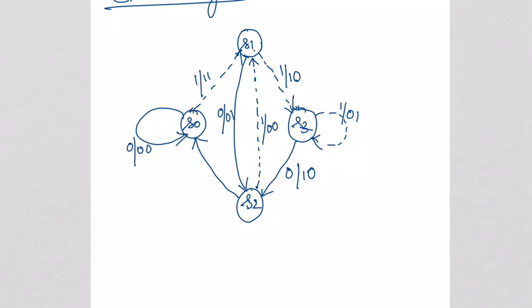When you apply 0 at S0, the output is 00 and it goes to the same state S0. When you apply 1 at S0, the output is 11 and it goes to the next state S1. From S1, when you apply 0 it goes to S2, and when you apply 1 it goes to S3. From S2, when you apply 0 it goes to S0.